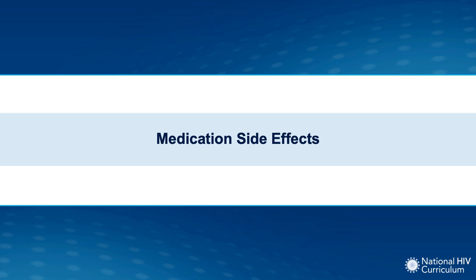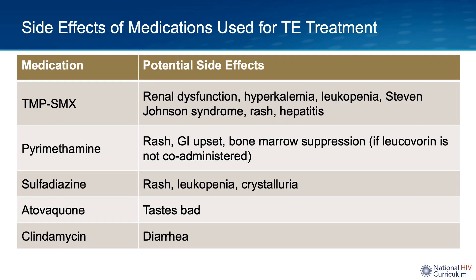Let's discuss common side effects of medications used for toxoencephalitis treatment. Trimethoprim sulfamethoxazole can cause renal dysfunction, hyperkalemia, leukopenia (especially neutropenia), hepatitis or transaminitis, and — since it is a sulfa drug — mild rash or, on the more severe end, Stevens-Johnson syndrome. Pyrimethamine is very expensive and can cause nausea, vomiting, and bone marrow suppression if not co-administered with leucovorin. Sulfadiazine, also a sulfa drug, can cause rash, leukopenia, or crystalluria. Clindamycin can cause diarrhea. Atovaquone does not have many major side effects, but the vast majority of patients complain that it tastes bad.